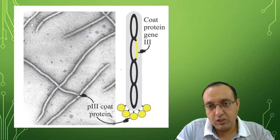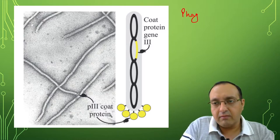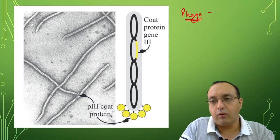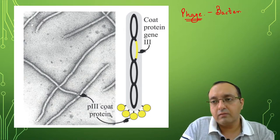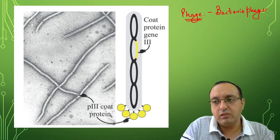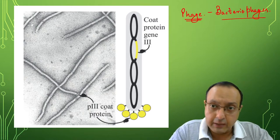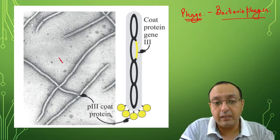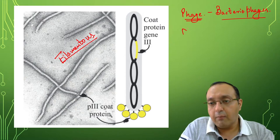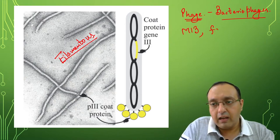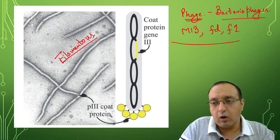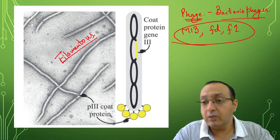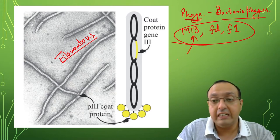Phage display uses filamentous phage. Phage is short for bacteriophage — these are viruses which infect and kill bacteria. There are many types: icosahedral, rounded, and different types of phages, and some are filamentous forms. Common ones among them are named M13, FD phage, and F1 phage. These are commonly used in biotechnology, and M13 has been very useful for the early days of DNA sequencing.